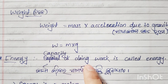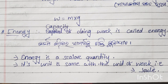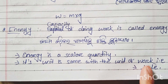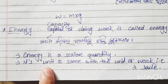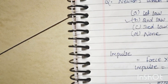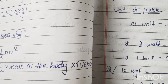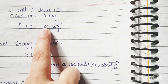Energy means the capacity of doing work. Energy is a scalar quantity. The unit of energy is the same as the unit of work — the Joule. 1 Joule equals 10 to the power of 7 ergs.